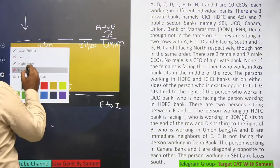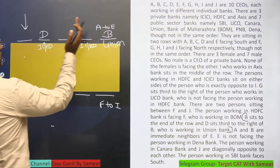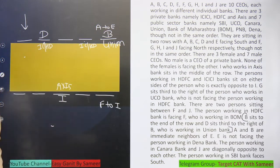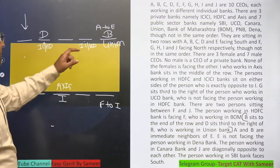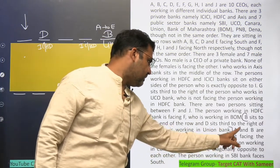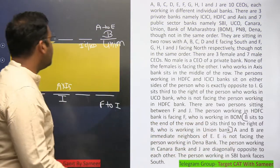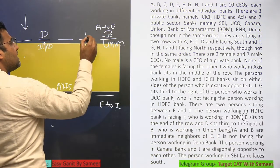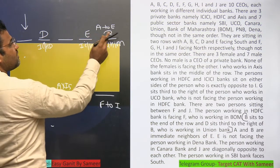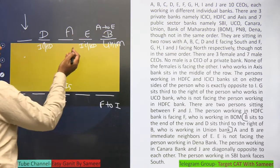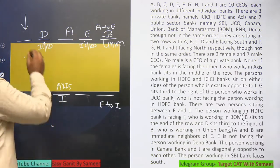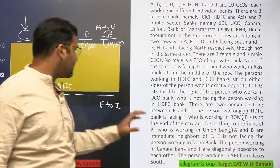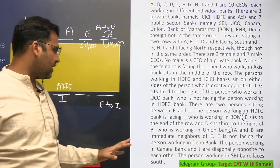With D placed third to the right of B, use the next clue: A and B are immediate neighbors of E. Since B is at the end, E must be immediately next to B, and A must be immediately next to E on the other side. The only person remaining is C, who fills the last position.